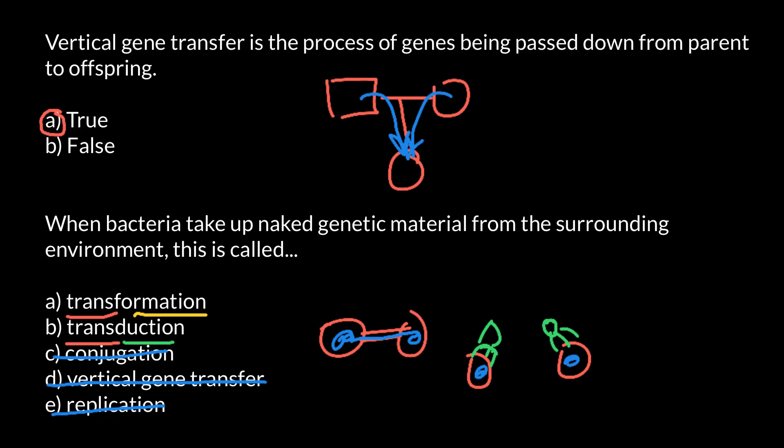But transformation would be a situation when, say, one bacteria dies and would leave her genetic material exposed. And another bacteria would acquire this piece of genetic material. And again, this genetic material can be a gene that would provide, for example, antibiotic resistance, and so would affect fitness of this bacteria.